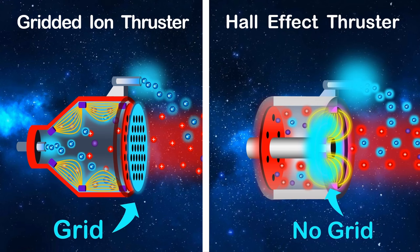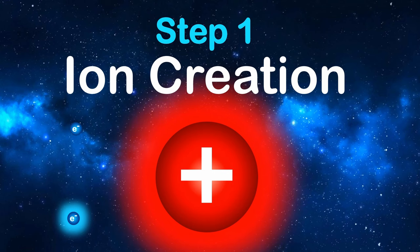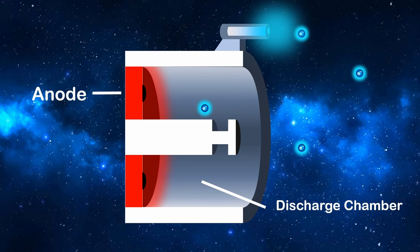So how does the Hall Effect Thruster work? Step 1: Ion Creation. An electron gun fires negative electrons into space, but a positive anode pulls some of them into the discharge channel. Meanwhile, xenon atoms or other inert gases are fed into the channel.